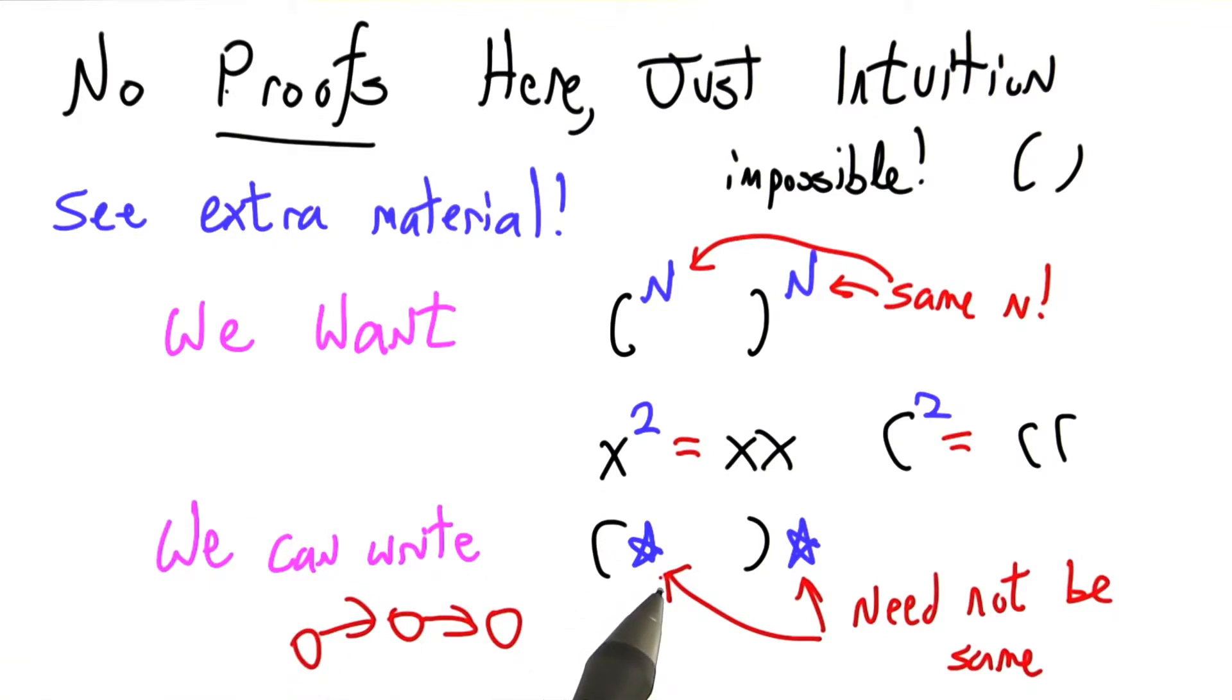So with regular expressions, I can say 0 or more open parenthesis followed by 0 or more closed parenthesis, but those two numbers don't have to be the same. So regular expressions can't always remember two different numbers and force them to be equal.